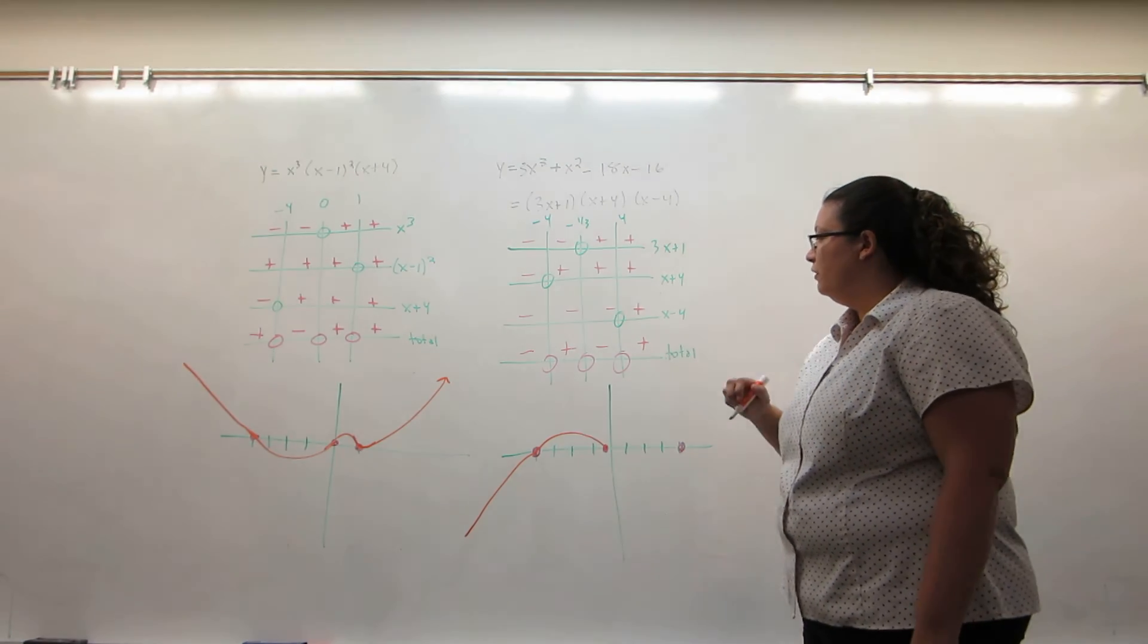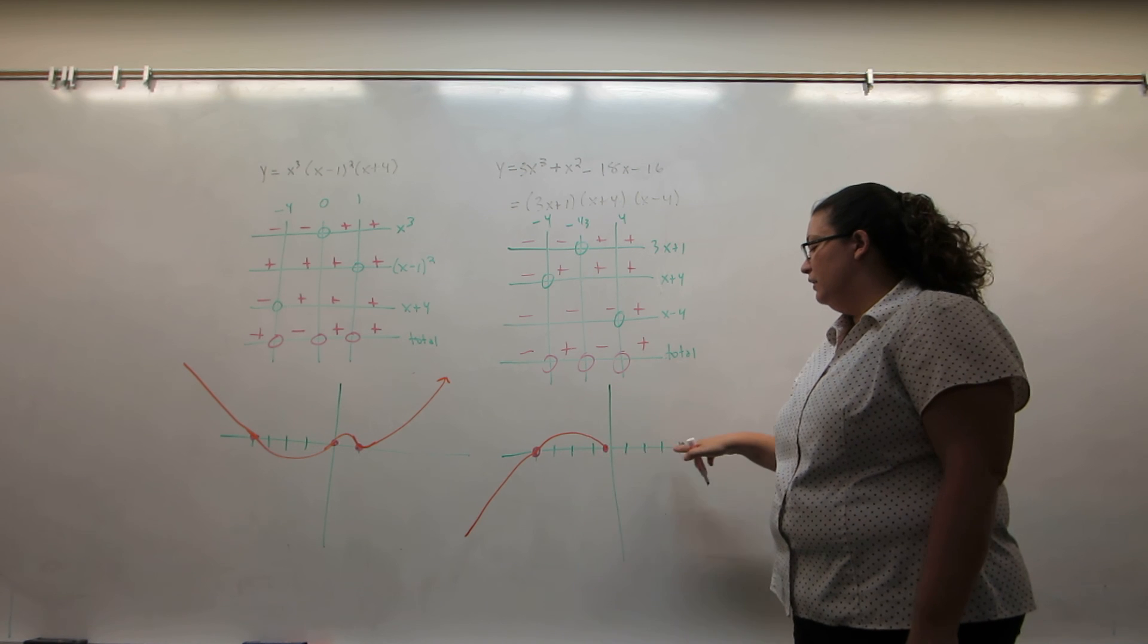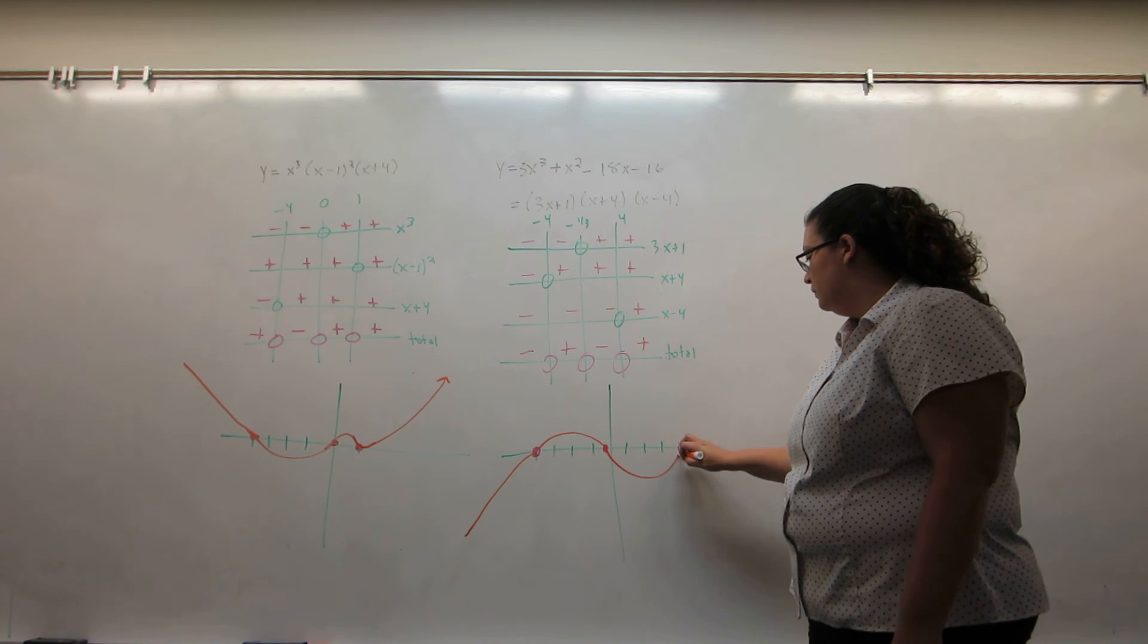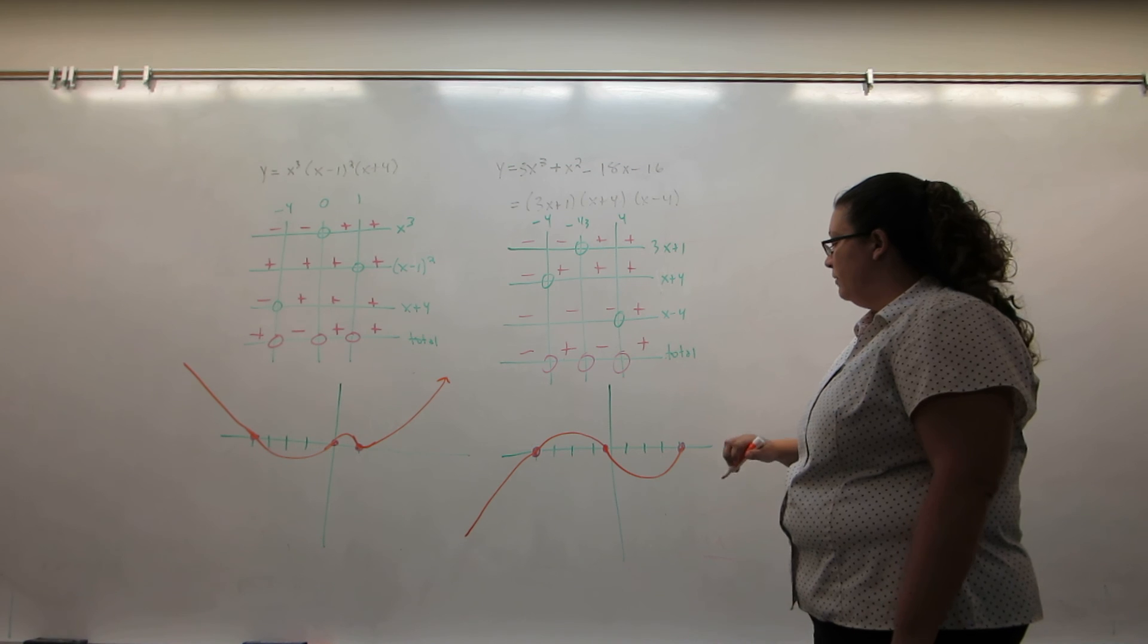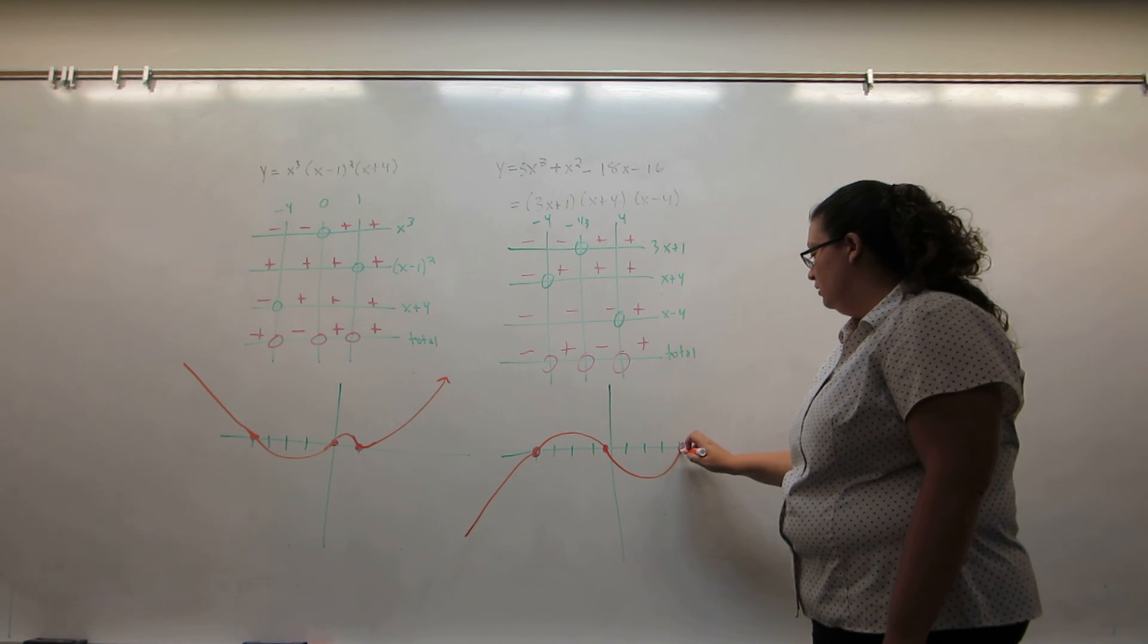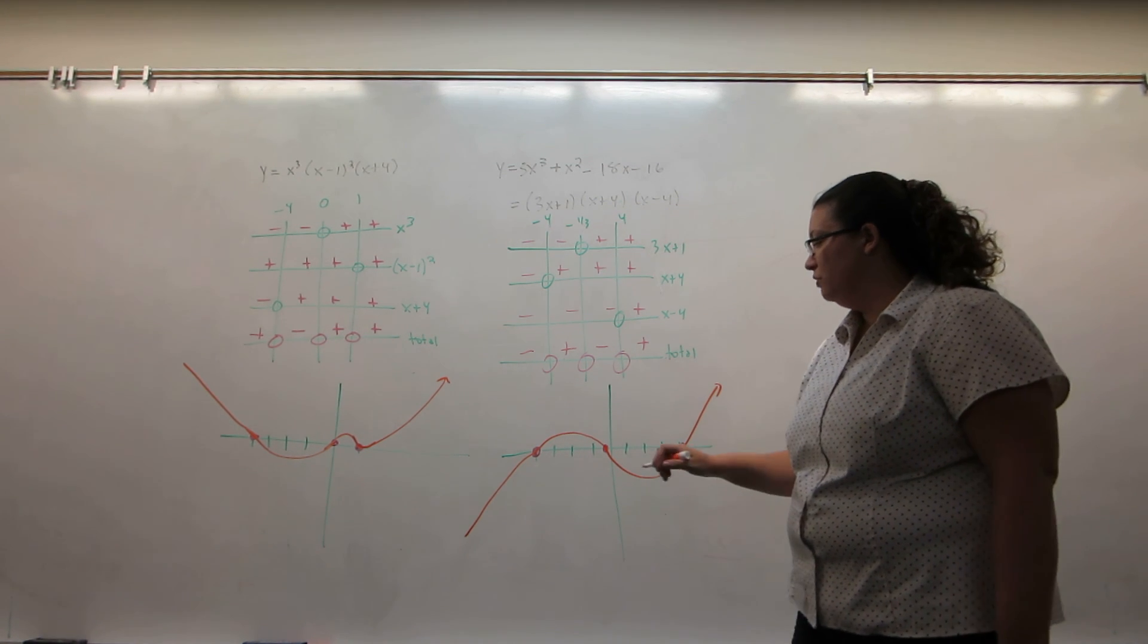Between minus a third and four, it's negative. Again, I have a starting and ending point, so I know how to connect them. And then after four, it's positive. It must start here. So to stay positive, it must shoot up.